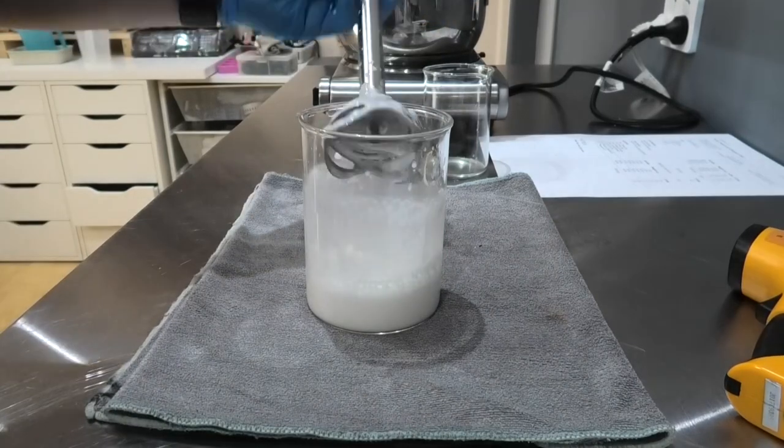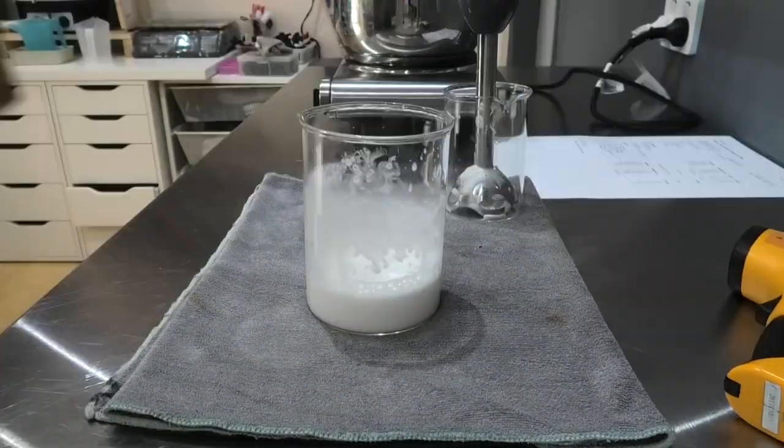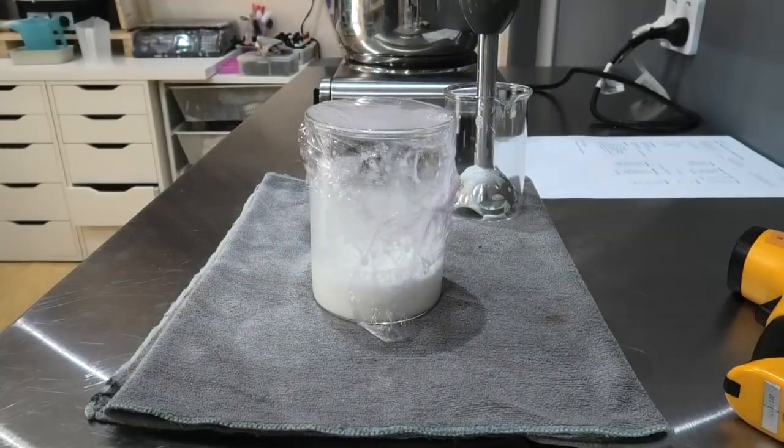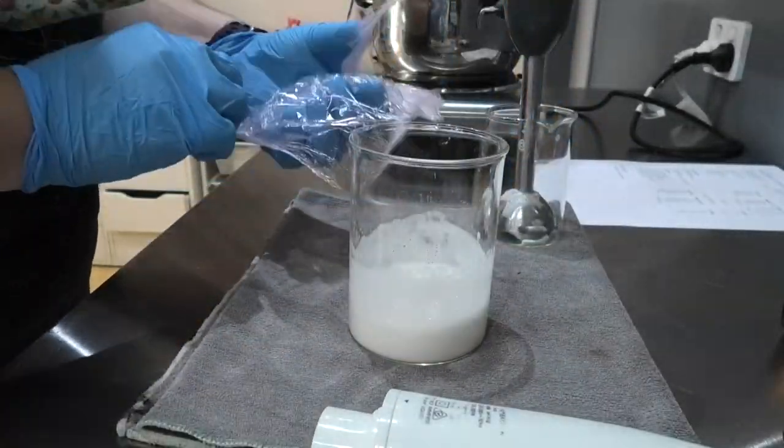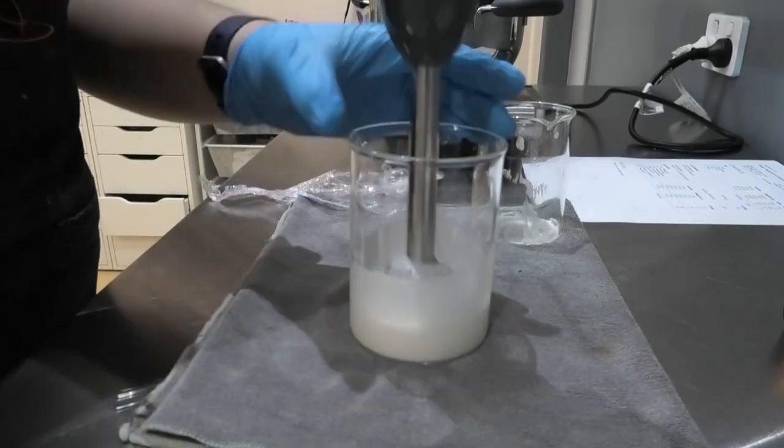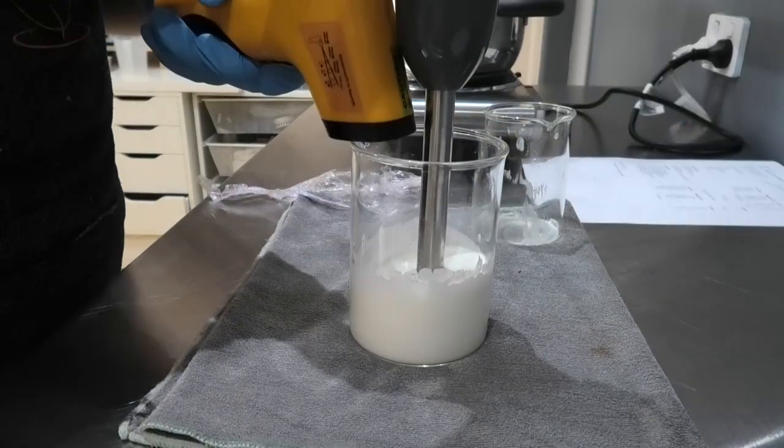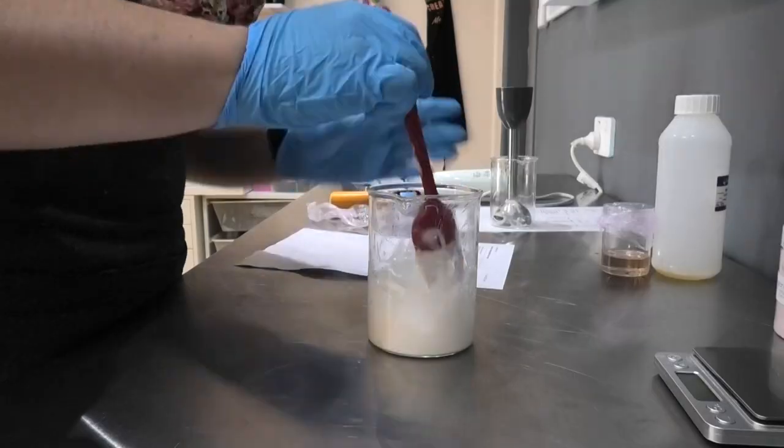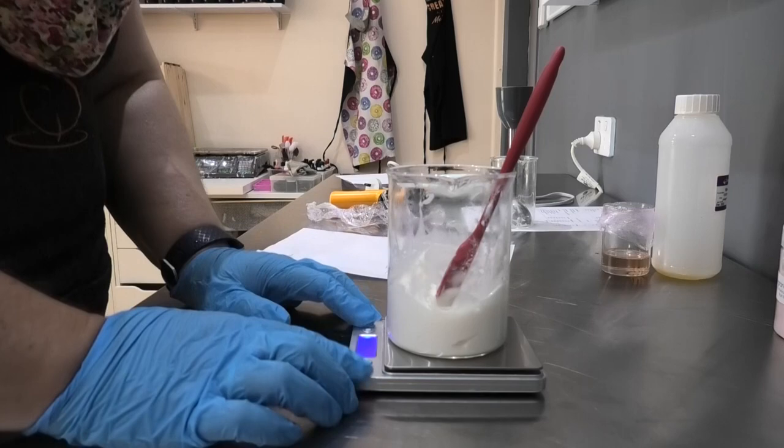Next we're going to give it a bit of a mix with the stick blender just to make sure everything emulsifies and comes together and then I'm going to cover it back up because while it's still hot it's still going to lose some of that moisture. I left it for five minutes and I've come back to give it another mix just to make sure that it has combined really well and now what I want to do is wait for this to come down in temperature so we can add in our phase C.